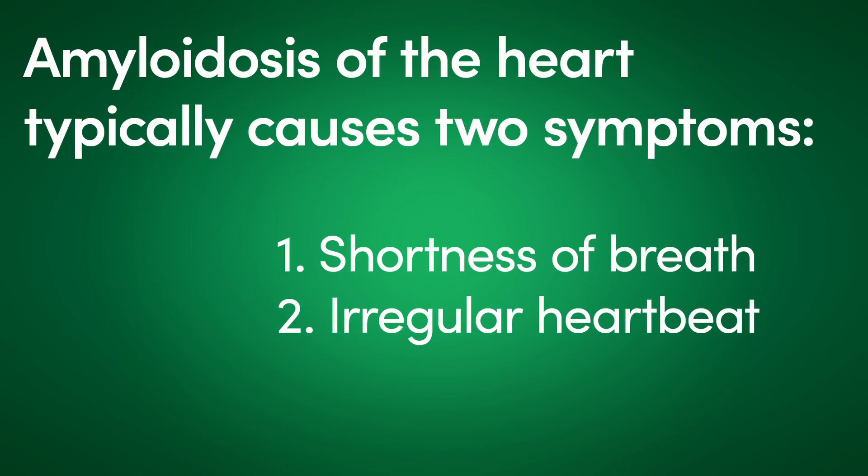The symptoms of amyloidosis are based upon which organ is affected. Typically there are two types of symptoms you see when the heart is affected. One is heart failure, and heart failure symptoms are typically shortness of breath, fatigue, lack of energy, and generalized weakness. Another group of symptoms are related to irregular heartbeats or heart arrhythmias.